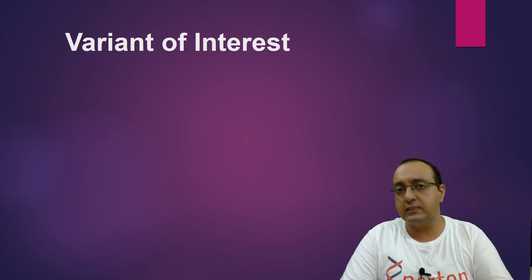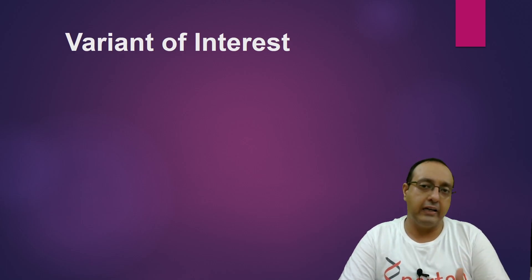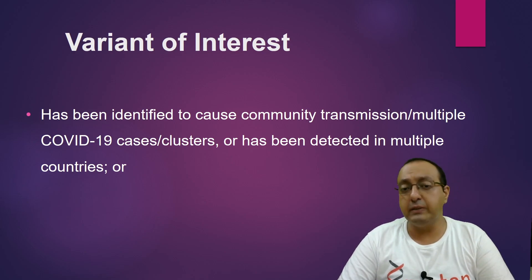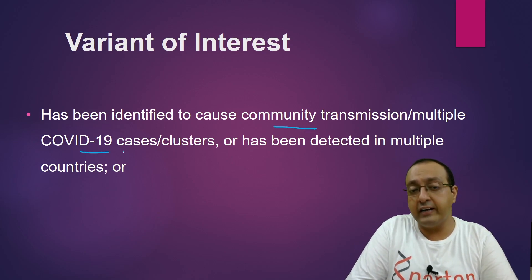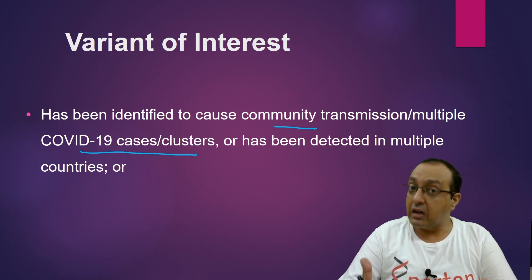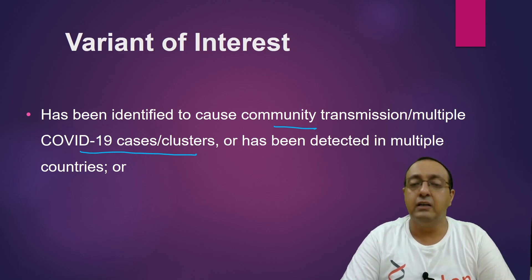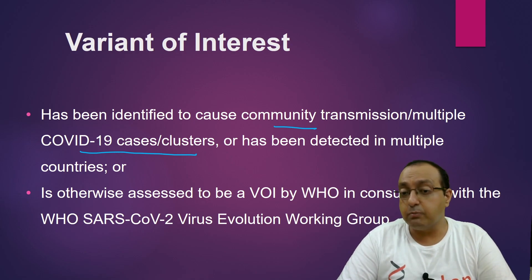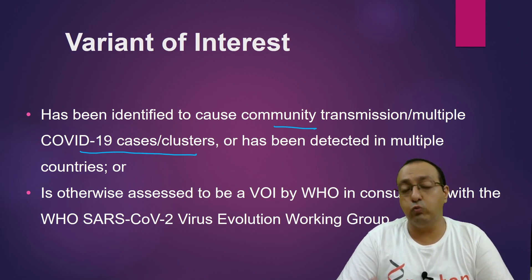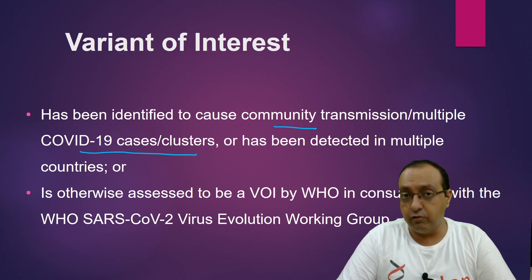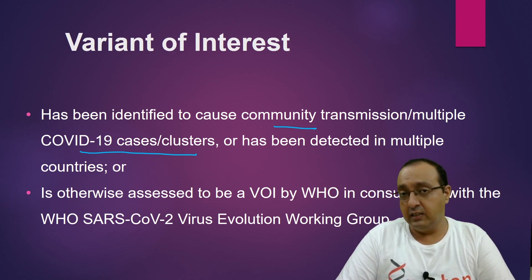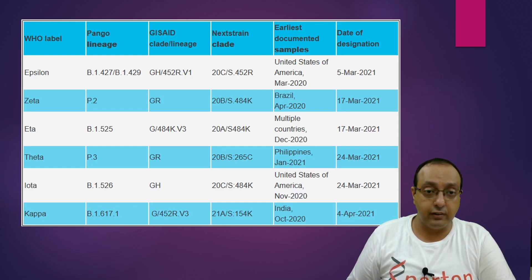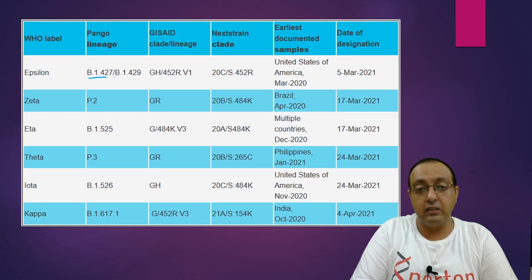Variant of interest is a slightly lower-level danger signal but is still actively monitored by WHO. A variant of interest has been identified to cause community transmission or multiple COVID-19 cases or clusters, or has been detected in multiple countries, suggesting a high degree of transmission. It is assessed as a variant of interest by WHO in consultation with the Virus Evolution Working Group, which tracks its potential effects.